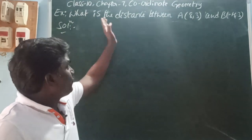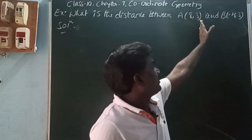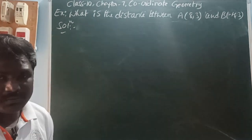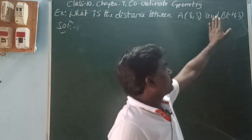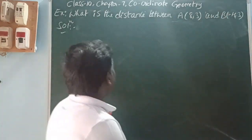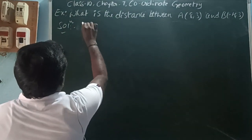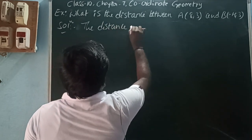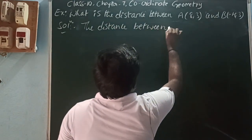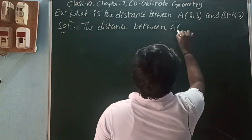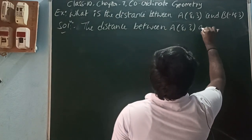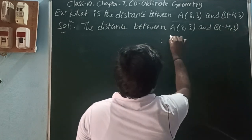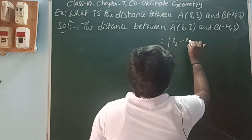Next, what is the distance between A(8, 3) and B(-4, 3)? Same — since the y-coordinate is the same in both points, the formula is modulus of x2 minus x1. The distance between A(8, 3) and B(-4, 3) is modulus of x2 minus x1.